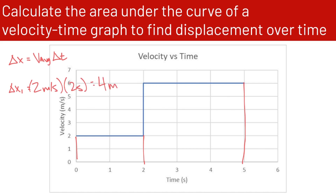The units work out as meters per second times seconds — the seconds cancel, leaving meters. For delta x₂, the average velocity is 6 meters per second times the time interval of 5 seconds minus 2 seconds, which is 3 seconds. That gives us 18 meters.